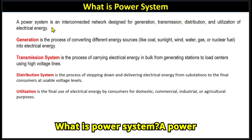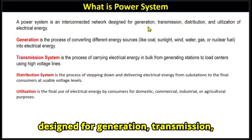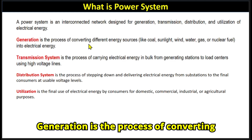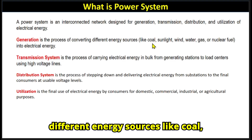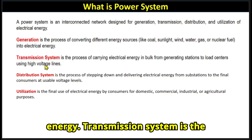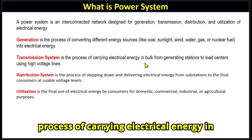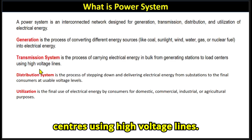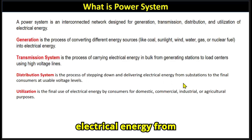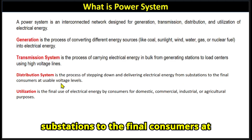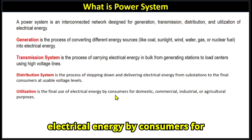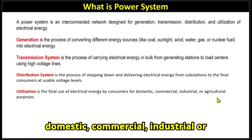What is a power system? A power system is an interconnected network designed for generation, transmission, distribution, and utilization of electrical energy. Generation is the process of converting different energy sources like coal, sunlight, wind, water, gas, or nuclear fuel into electrical energy. Transmission carries electrical energy in bulk from generating stations to load centers using high voltage lines. Distribution steps down and delivers electrical energy from substations to final consumers at usable voltage levels. Utilization is the final use of electrical energy by consumers for domestic, commercial, industrial, or agricultural processes.